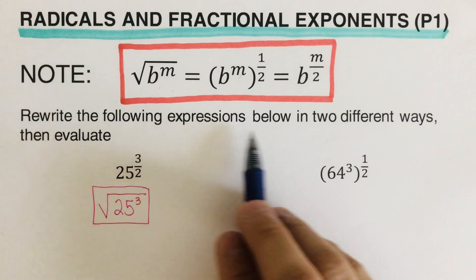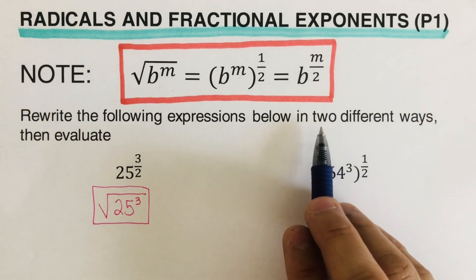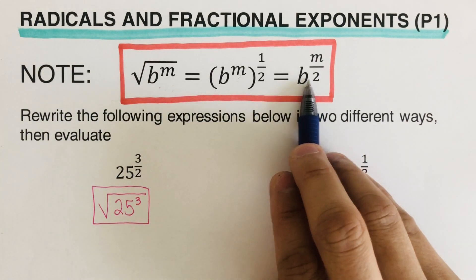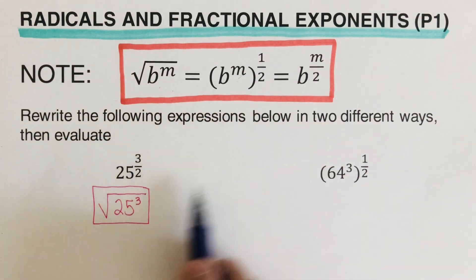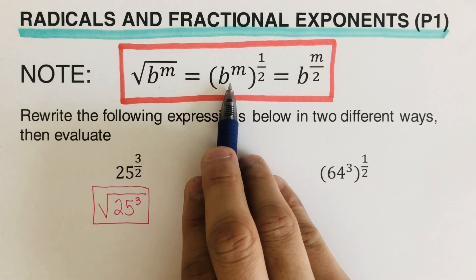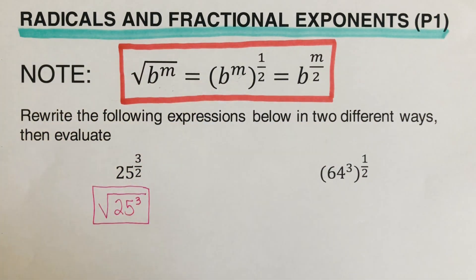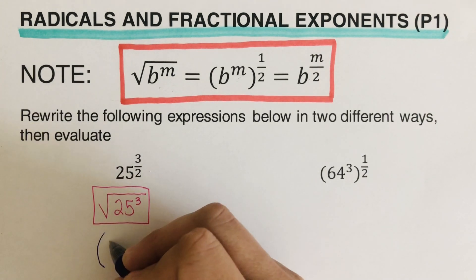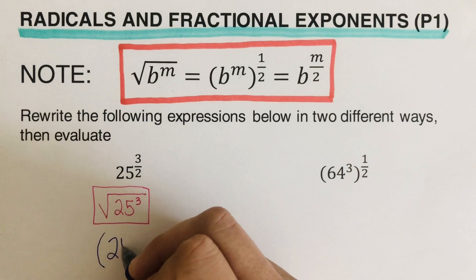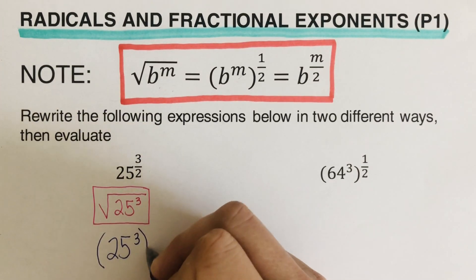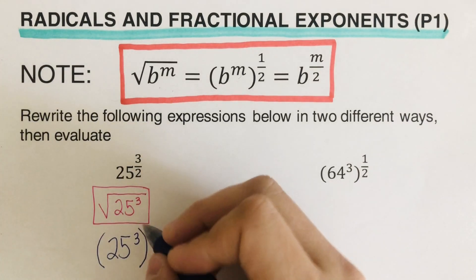The third equivalent expression, since we need two more, looks like this: the second expression would be 25 to the third power, raised to the power one-half. So we now have three equivalent expressions for 25 to the three-halves.